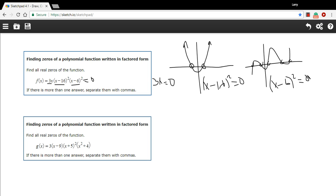Then we just solve them for x. So in this first one, I would just need to divide by 3, and I would get x equals zero. So for this particular function, it crosses the x-axis at zero.